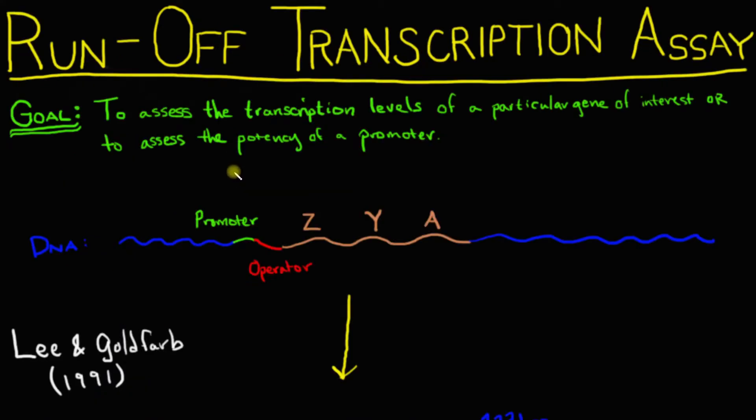So now we're going to talk about the actual experiments done by Lee and Goldfarb in 1991 that investigated whether or not the repressor blocked RNA polymerase from binding to the promoter, or whether it simply blocked elongation. To investigate this, they performed a runoff transcription assay, which basically has as its goal to assess the transcription levels of a particular gene of interest, or, more importantly for us, to assess the potency of a promoter, here the lac operon promoter, so the lac promoter.